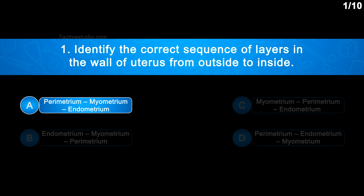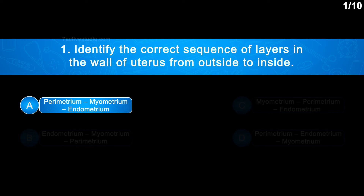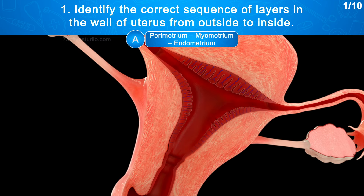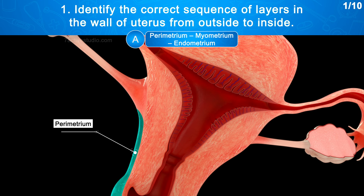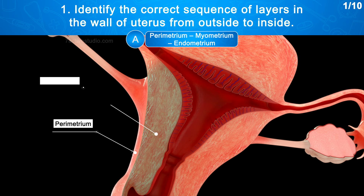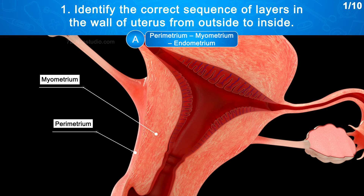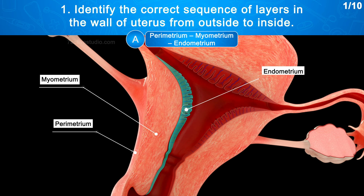The correct answer is Option A: Perimetrium, Myometrium, Endometrium. The uterus has an external thin membranous perimetrium, a middle thick muscular myometrium, and an inner glandular endometrium.